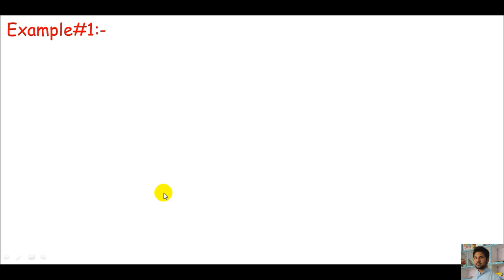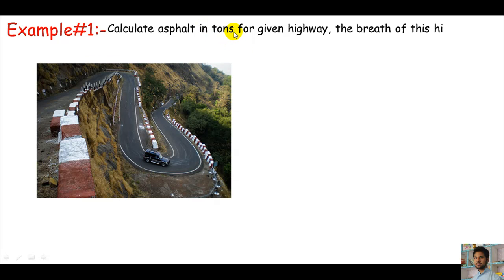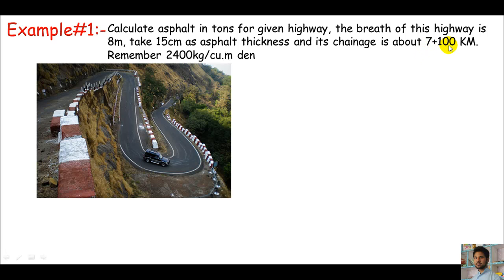Here is example 1. In this example we are asked to calculate asphalt in tons when the breadth of this highway is 8 meters and the thickness of asphalt layer is 15 centimeters. The chainage of this highway is about 7+100 kilometers. Remember the asphalt density is 2400 kg per cubic meter. The reference is specifications. Remember the density is the density for compacted asphalt, so all compaction factors will be ignored.